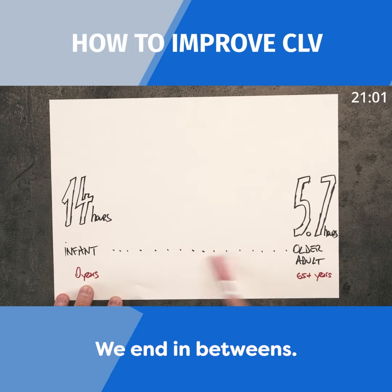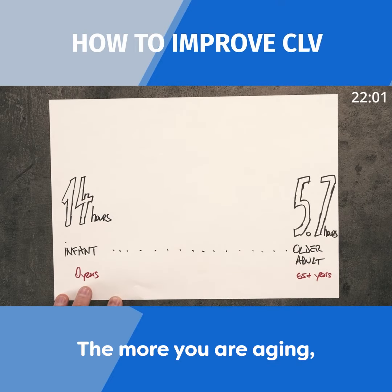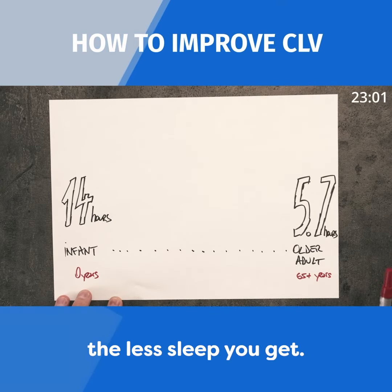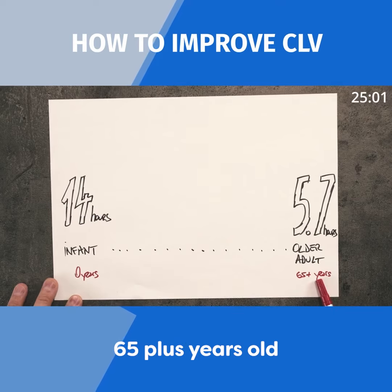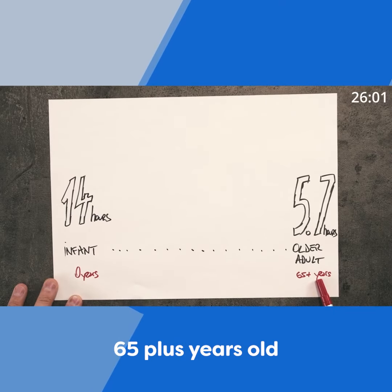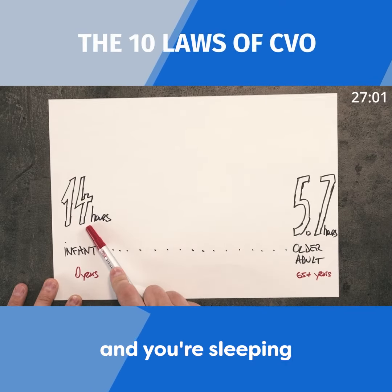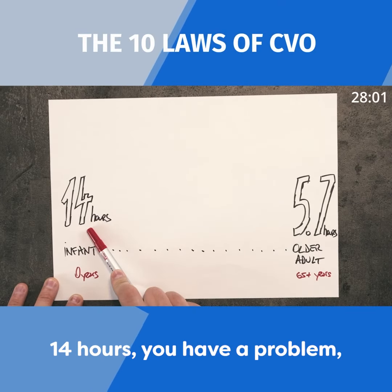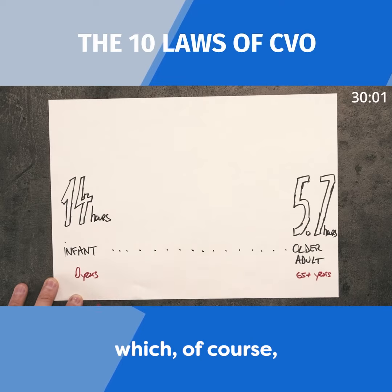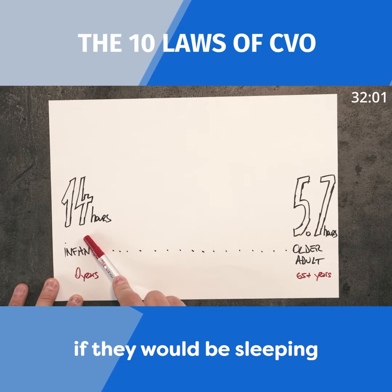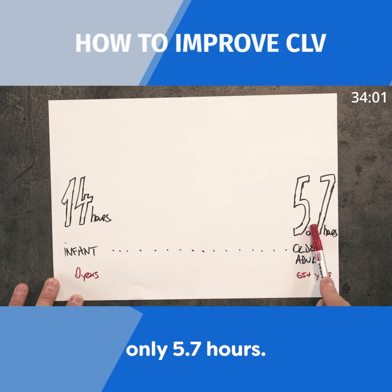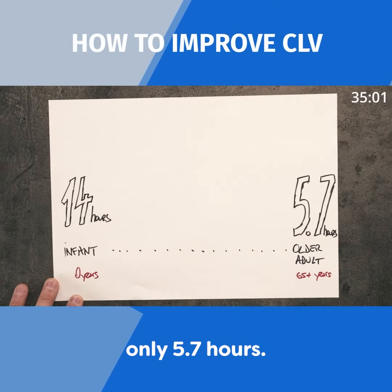And in-betweens — the more you're aging, the less sleep you get. So if you're 65-plus years old and you're sleeping 14 hours, you have a problem. Of course, babies would have a problem if they were sleeping only 5.7 hours.